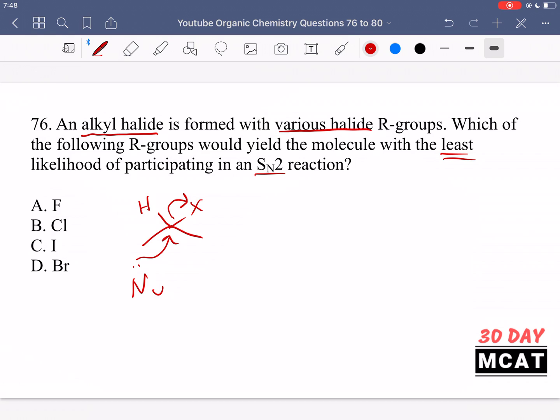The one that is most likely to undergo SN2 is the one which has the weakest bond between carbon and the halide group, and that would be iodide. Iodide has the worst bond between the two because it's in that group of the periodic table, it's the largest atom with the largest atomic radius. Therefore, carbon and iodide, their bond can't be that close together. When you have a bond further apart, that means it's a weaker bond.